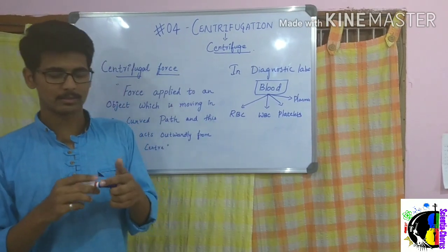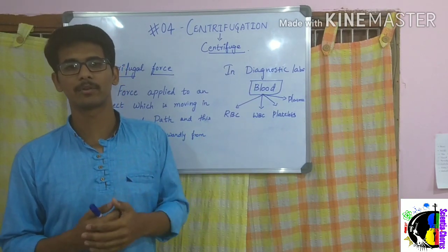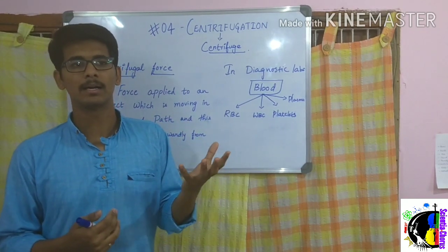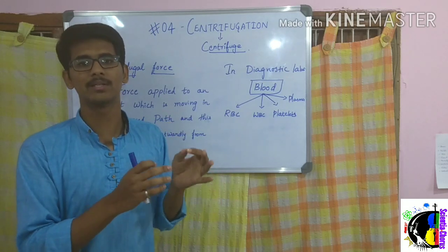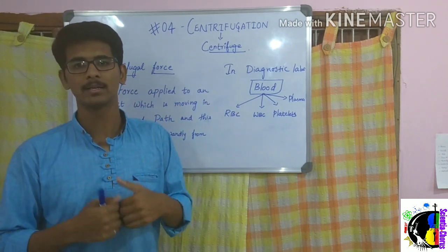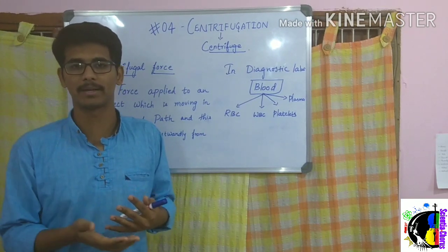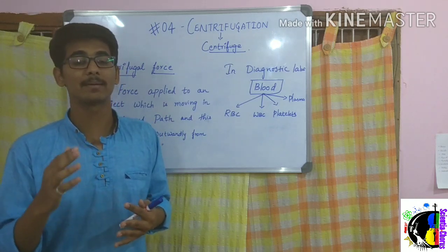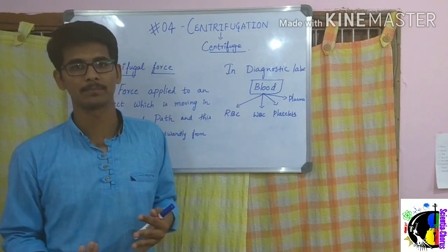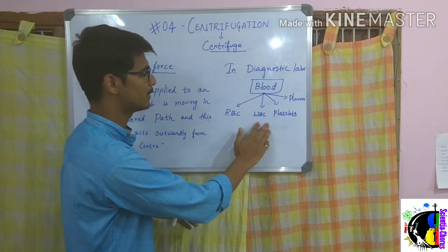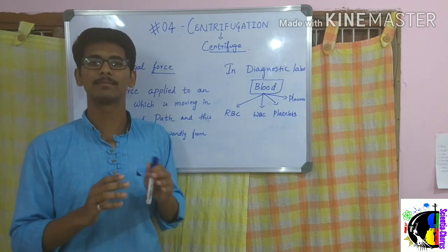Why do we need to separate blood components? Consider a person suffering from dengue — they will have a lower than normal platelet count. In some critical conditions, a platelet transfusion is needed, where platelets from outside are introduced into the body. In this case, only the platelets are needed, not RBC, WBC, or plasma.